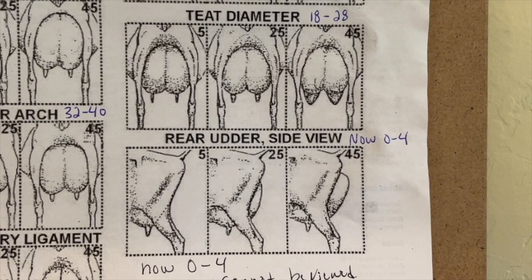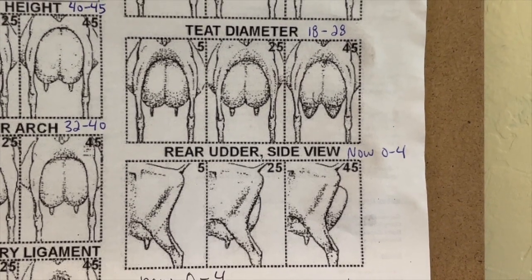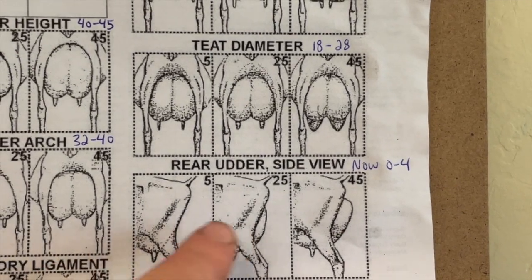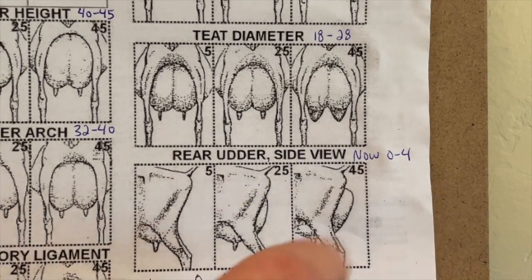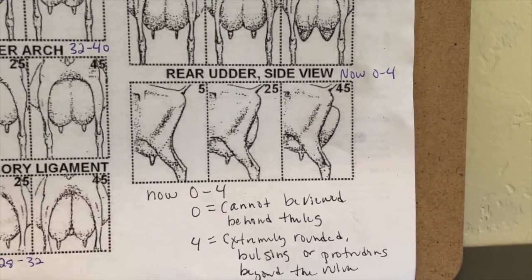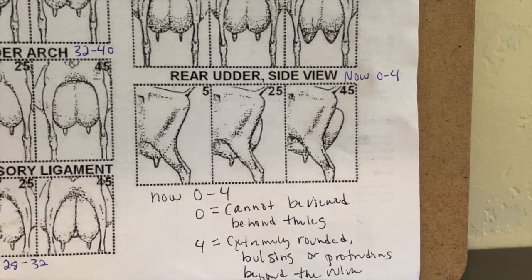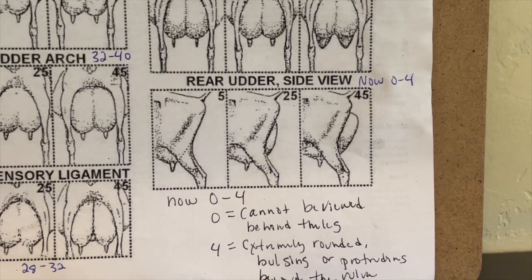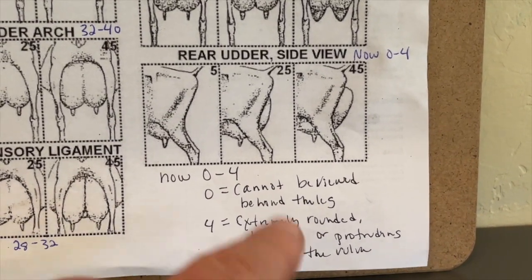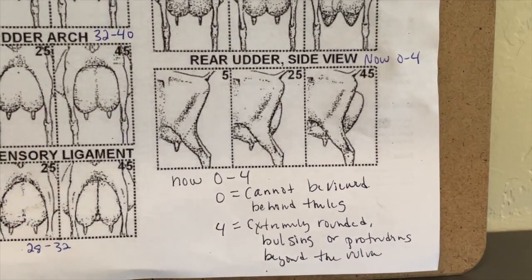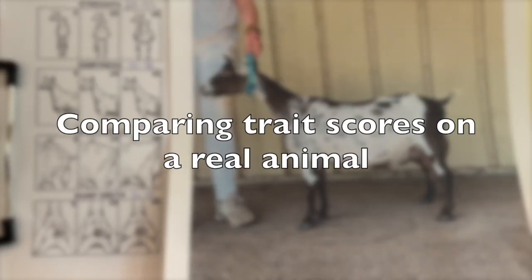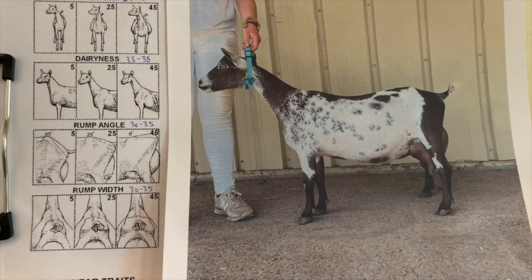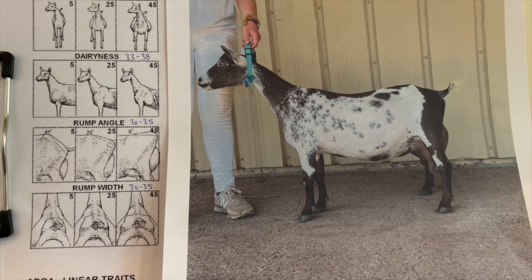For rear udder side view, note that this sheet hasn't been updated — it's now scored on a scale of 0 to 4. A score of zero means you cannot view the udder because it's hidden behind the leg with almost no rear udder there, and a score of 4 means the udder is extremely rounded, bulging, or protruding beyond the vulva.